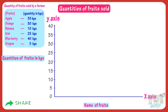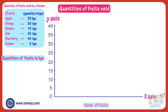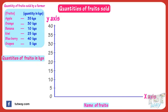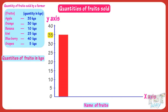So make a scale showing numbers 1 to 40. On the x-axis we will show the names of fruits and relate them to their quantities. It's given that 35 kgs of apples were sold, so make a rectangular bar up to the mark of 35 and label it with apples.